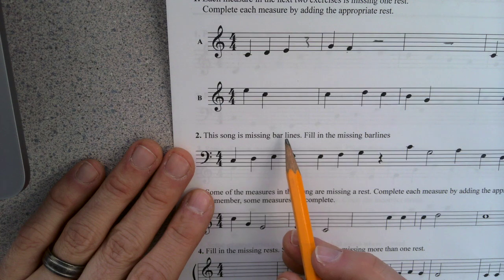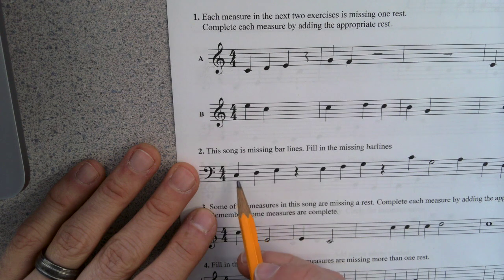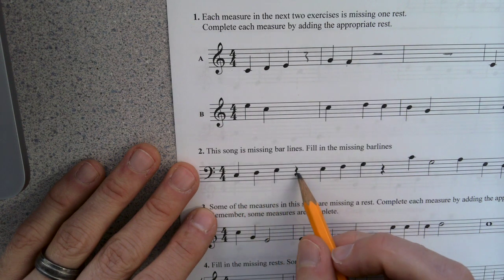And then figure out what the missing number of notes is. It's like simple math. Down here, this song is missing bar lines. Fill in the missing bar lines. So you know from the last assignment, you count to four and then drop a bar line in. One, two, three, four. Boom. There it goes.